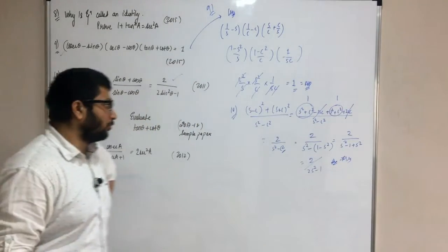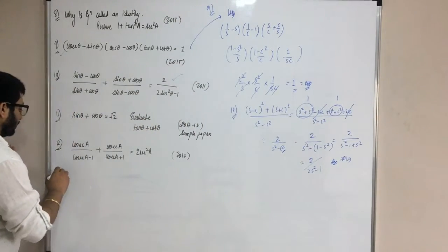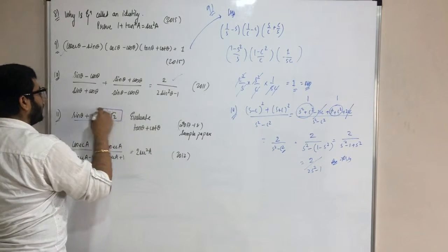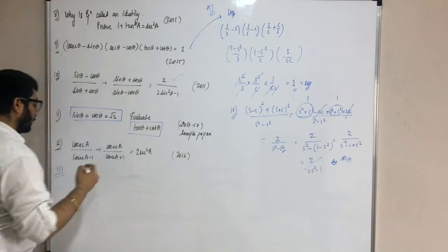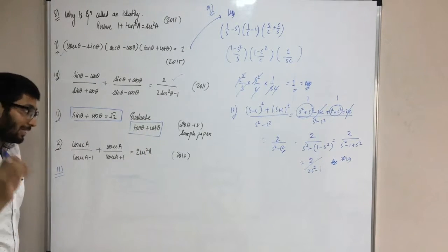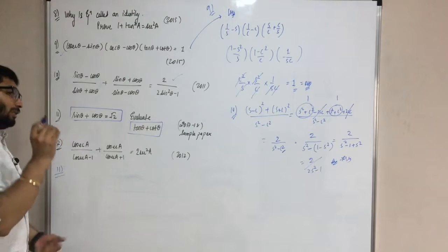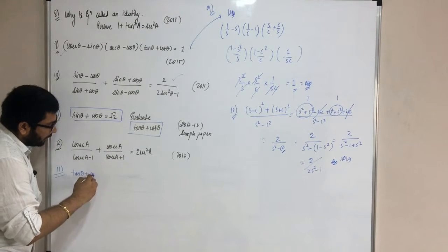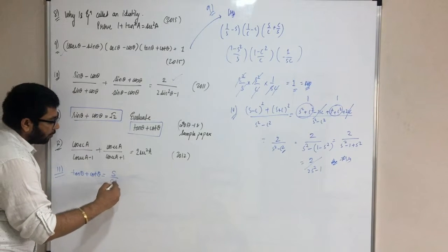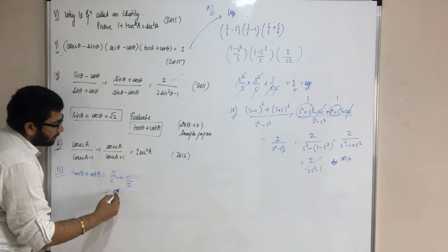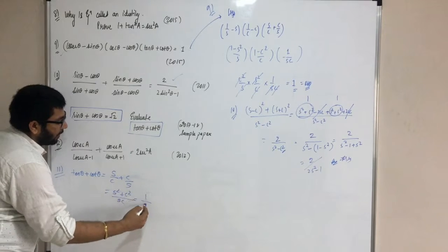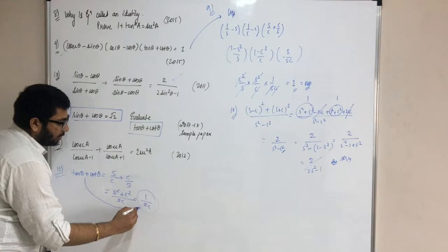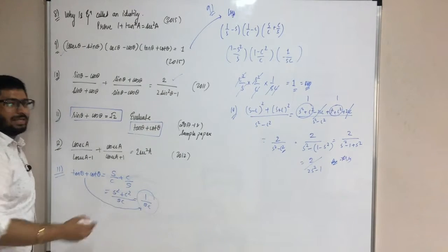Now let's see the 11th question. You know the value of sine plus cos, and you have to evaluate tan theta plus cot theta. Now, tan theta plus cot theta gives sine over cos plus cos over sine, which is sine squared plus cos squared over sine cos, which is 1 over sine cos. So if you want to write tan theta plus cot theta, this means you want to write 1 by sine theta times cos theta.